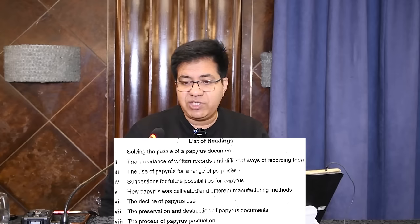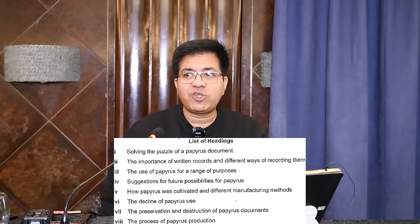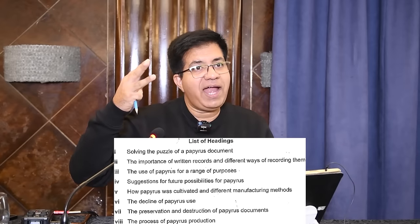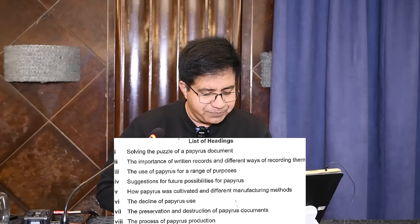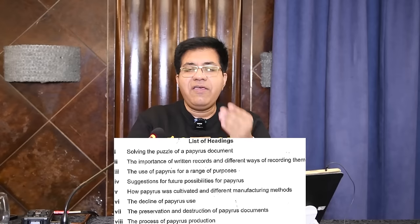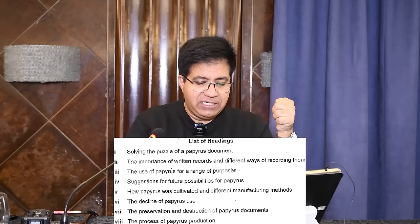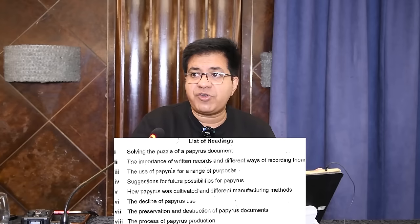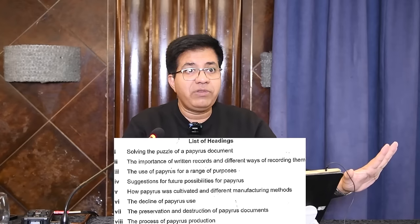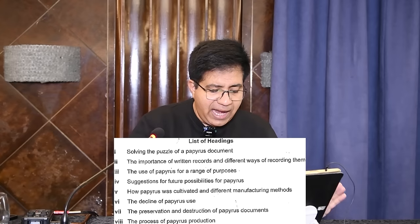There are five questions and eight headings — three headings are extra, and these three extra headings are enough to confuse you. If you use those three extra headings, three answers will be absolutely wrong. Be careful. Heading number five: 'How Papyrus Was Cultivated and Different Manufacturing Methods.' When one heading has two parts, be careful — if they talk about cultivation and manufacturing, it goes there; if cultivation only, it does not.